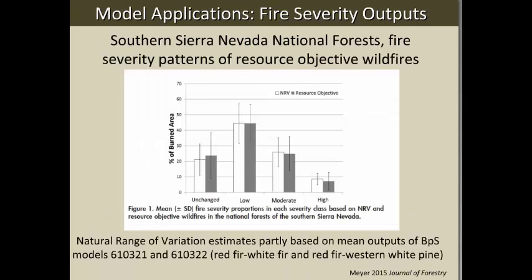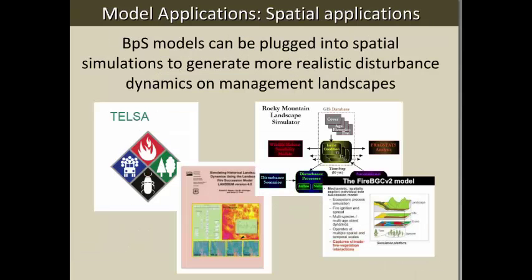Another application: Mark Meyer published something in the Journal of Forestry looking at the effectiveness of wildland fire use — fires managed for a variety of resource objectives. He took 17 fires that burned over a 10–15 year period in the 2000s and compared fire severity distributions against an estimate of natural range of variation largely based on mean outputs of a couple of BPS models we developed. The paper showed that when we actually choose to let fires burn in upper elevation Sierra Nevada forests, they tend to reproduce the kinds of fire severity patterns we want to see.